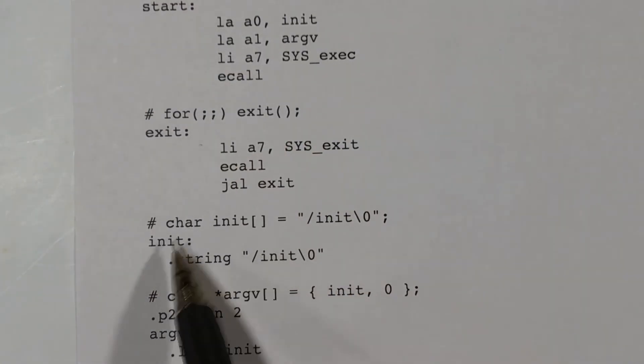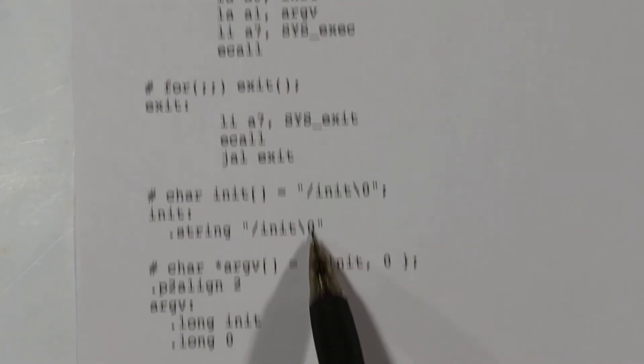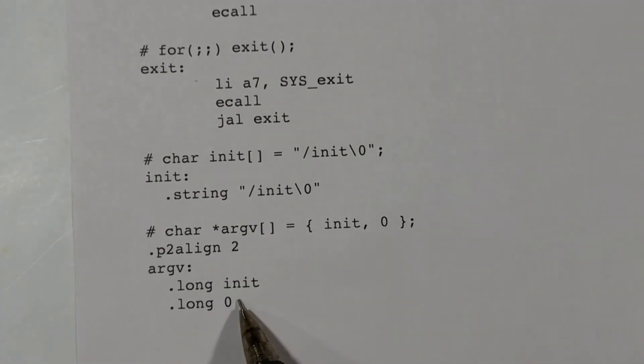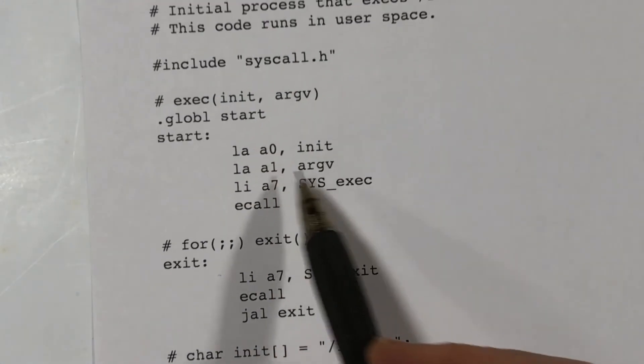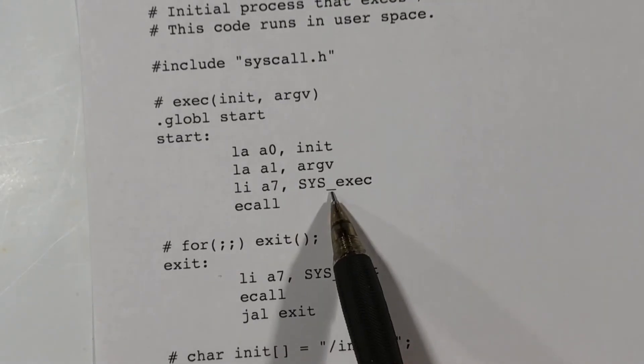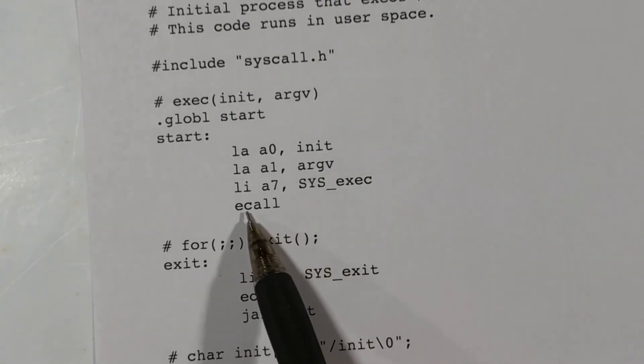So here we have init, backslash i-n-i-t, null byte. And here we have argv, which contains the address of init, and it contains a zero with an alignment statement here. So we load in the two arguments, and we set A7 to the code number for the exec system call, and we make the e-call. E stands for environment call.